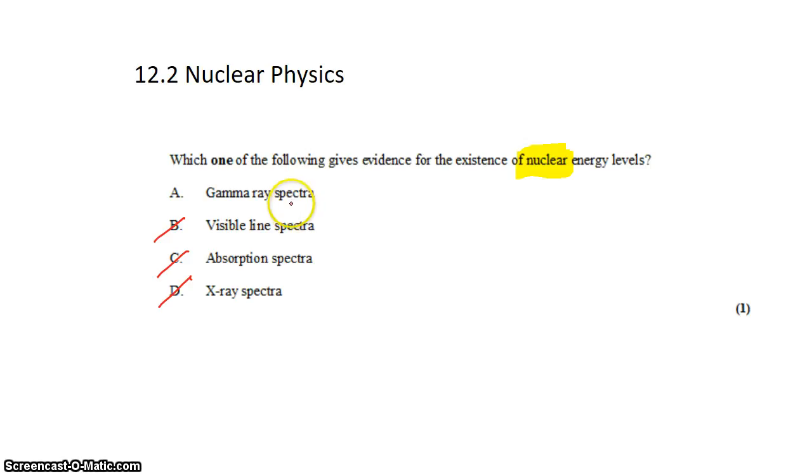Only gamma ray spectra are emissions from a nucleus. Gamma rays are also photons, just like the photons emitted in visible line spectra, and just like the photons absorbed in absorption spectra, and just like the photons emitted in x-ray spectra.